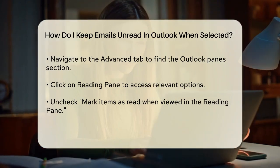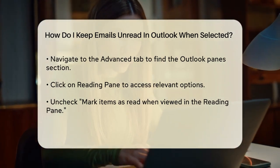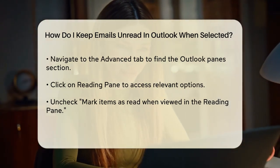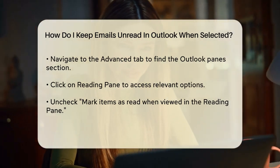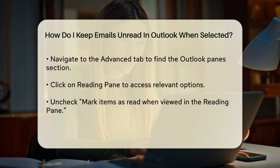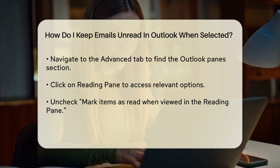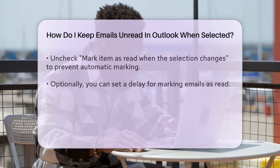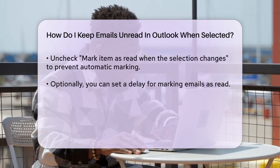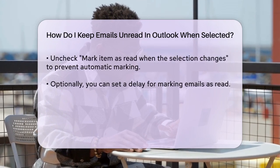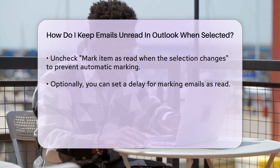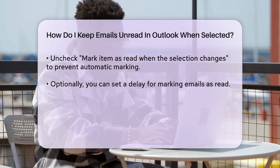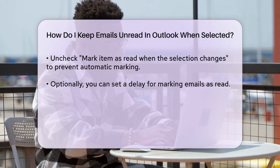But what if you still want emails to be marked as read after you've actually read them, just not immediately? You can set a delay. In the same Reading Pane options, you can check the Mark items as read when viewed in the Reading Pane box, and then set a delay in the Wait seconds before marking item as read box. For example, if you set it to 10 seconds, the email will only be marked as read if you've been viewing it for at least 10 seconds.